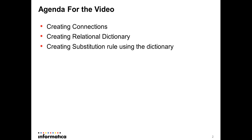The agenda for the video is this: first, we'll create the connections. Next, we'll see how to create a relational dictionary using the connection created in step one, and then we'll go ahead and create a substitution rule using that dictionary. Let's jump into the demonstration now.